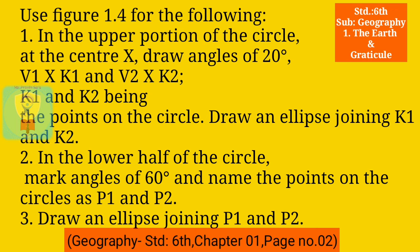Use figure 1.4 for the following. In the upper portion of the circle, at center X, draw angles of 20 degrees — V1-X-K1 and V2-X-K2 — K1 and K2 being the points on the circle. Draw an ellipse joining K1 and K2.